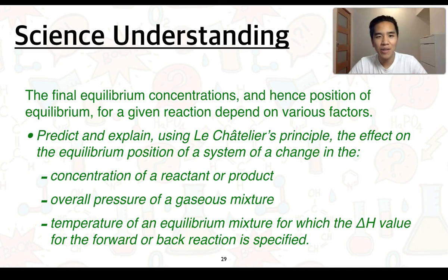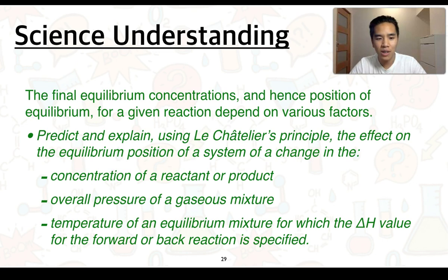Welcome back. This is part 3 of subtopic 2.2. We're going to look at this science understanding: the final equilibrium concentrations and hence position of equilibrium for a given reaction depends on various factors. What we're going to need to be able to do is predict and explain using Le Chatelier's principle the effect on the equilibrium position of a change in the concentration of a reactant or product, overall pressure of a gaseous mixture, or temperature of an equilibrium mixture for which the delta H value for the forward or back reaction is specified.